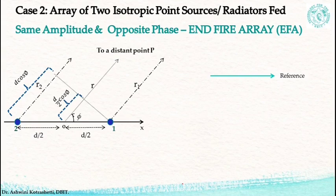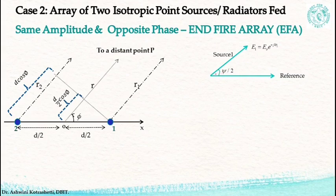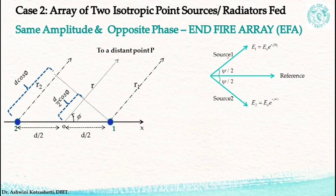We shall consider the vector field from each of the sources. From source 1 along path r1, I have E1 equal to E0 e raised to +jkr1. This E1 makes an angle of ψ/2, where ψ is the phase difference between the two sources — it is ψ/2 because this angle is made with respect to the origin. From source 2, I have E2 given by E0 e raised to −jkr2, which also makes an angle of ψ/2 with respect to the reference. This is the vector representation for currents in phase.